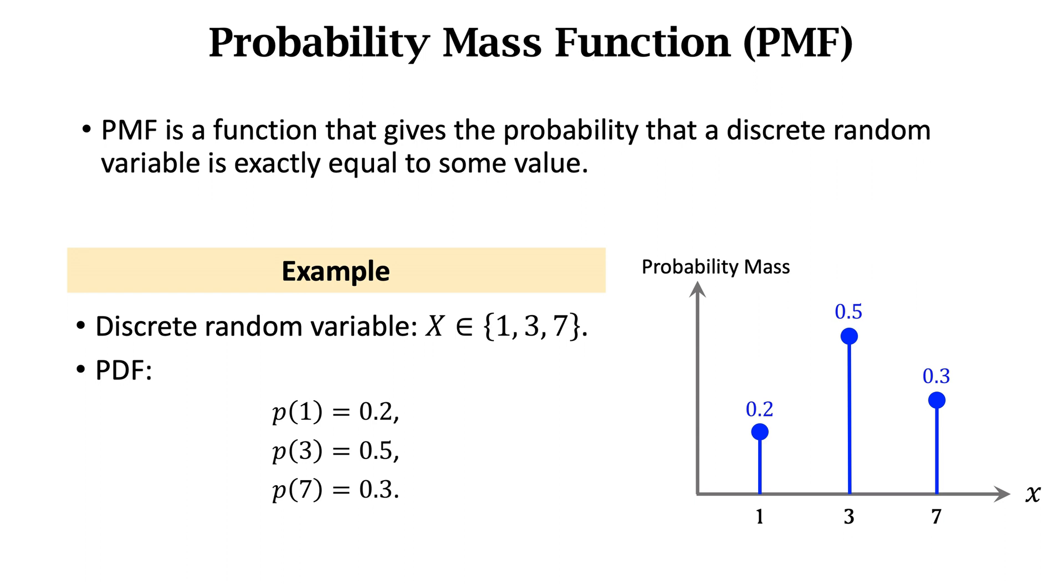Here is an example of discrete distribution. The discrete random variable can only choose value from the discrete set. The values can be 1, 3, and 7. p is the probability mass function. It describes the probability that the random variable is equal to 1, 3, or 7.